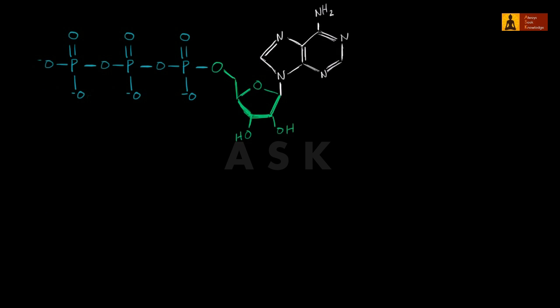Let's throw some water in there — H2O. So this is water right here: oxygen with two hydrogens, and I'll draw the two lone pairs on oxygen in the outermost shell. Let me draw one more water molecule right over here. There are multiple ways you could depict this, but let's say this water molecule right here — and obviously no chemical reaction happens this cleanly; this is showing how it can happen if they just bump into each other in the exact right way — has this pair of electrons.